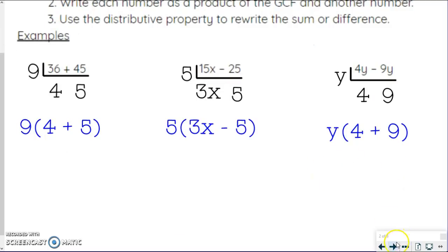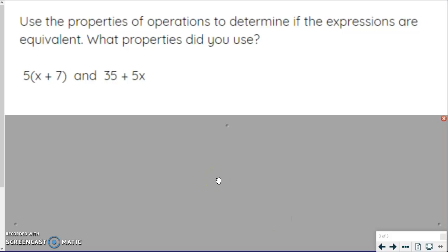Now they want us to decide if these two expressions are equivalent, and if so, what properties did we use? I see the multiplication with the parentheses with the addition sign. So I'm going to try distributive first. When I do that, I get 5x plus 35. So that used the distributive property, but it also used the commutative property because it's in the opposite order. So we first use distributive to get to this point, and then we use commutative to flip it around.